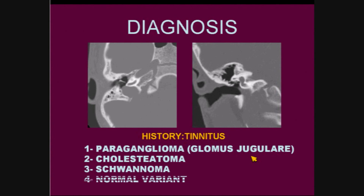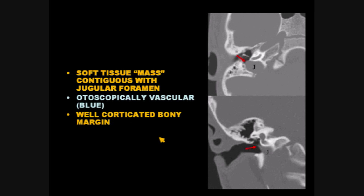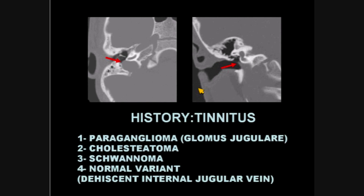Is this a schwannoma, or is this a normal variant? This patient — these are the two slides. The patient has a soft tissue mass which is contiguous with the jugular foramen and was otoscopically vascular, actually blue. Note the very well corticated bony margin — this is crucial and very important. Diagnosis: normal variant. It's a dehiscent internal jugular vein.